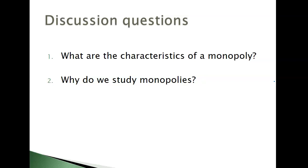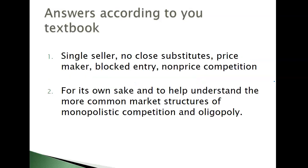Some of the first questions we get are: what are the characteristics of monopolies, and why do we study them? As a reminder, there is one seller in the industry, no close substitutes by definition. There's only one seller, so there can't be a competitor. Because of this, they are the price maker. The industry decides the price, but now there's only one firm in the industry, so that one firm decides the price, at least on the producer side. There's also blocked entry, and they will work in non-price competition.